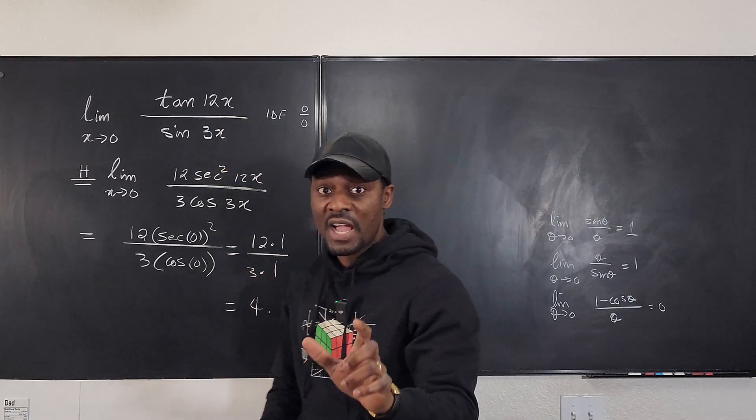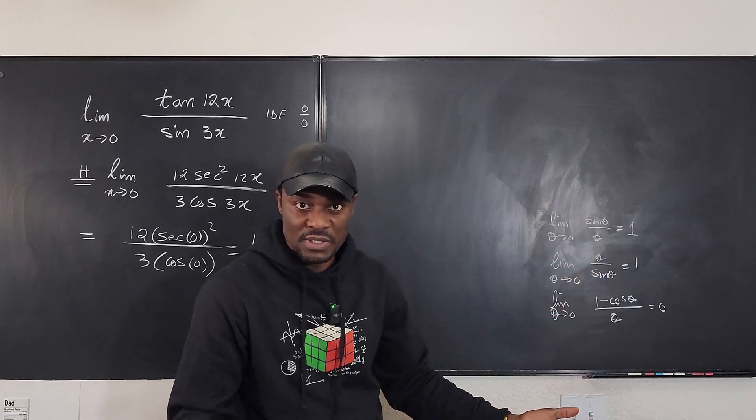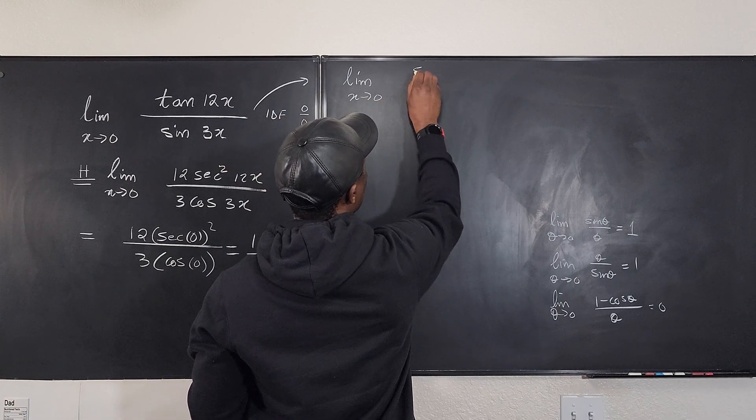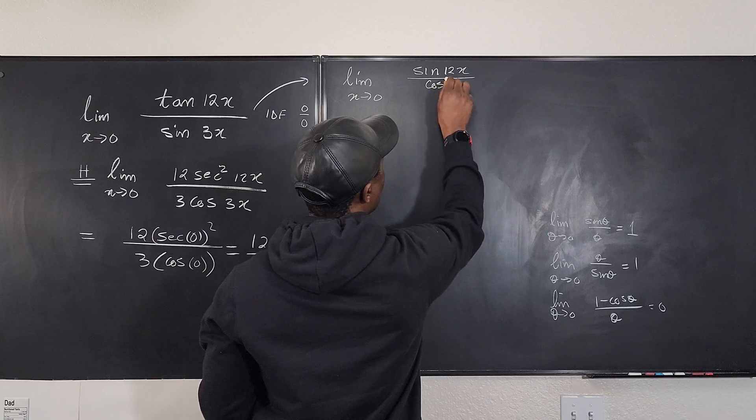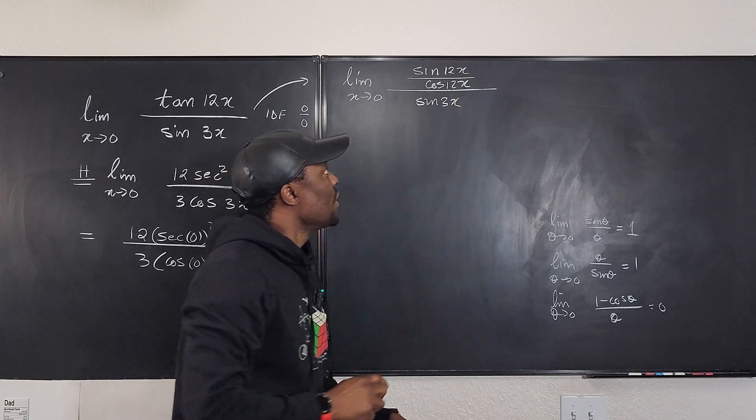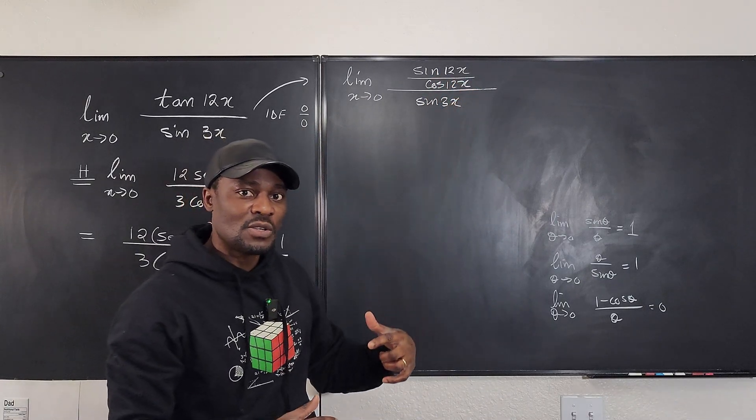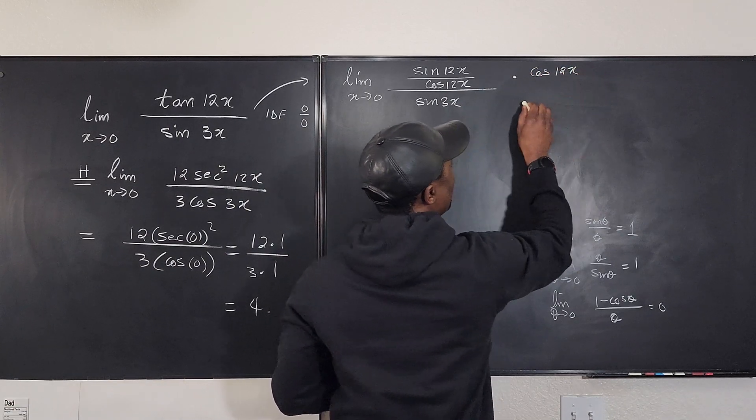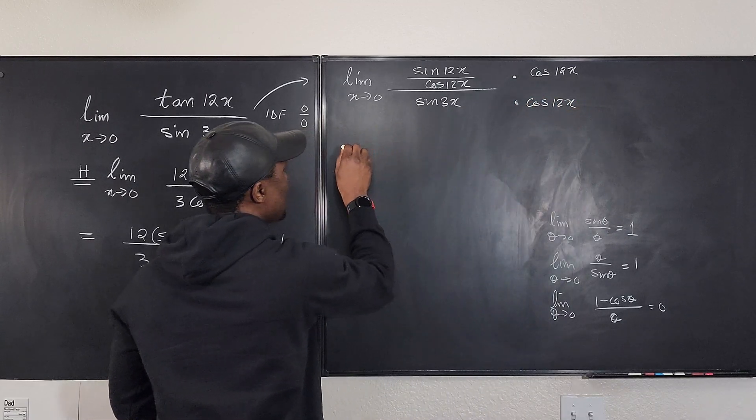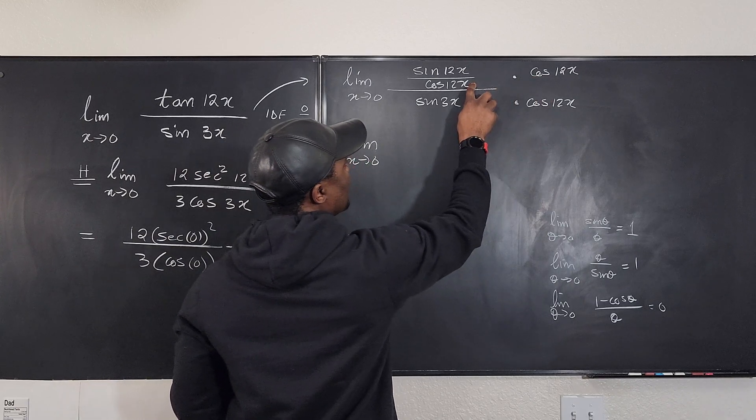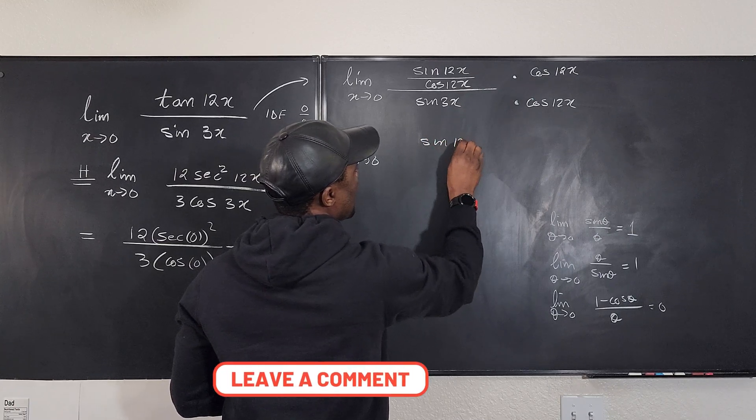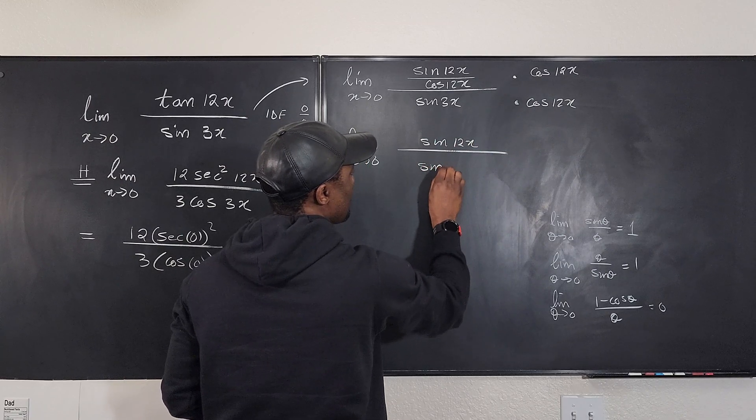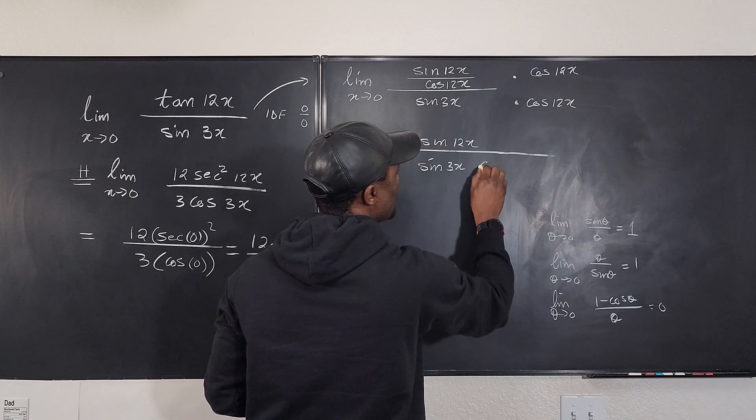We're going to say that this is the limit as x goes to zero of sine 12x over cosine 12x divided by sine 3x. So as you can see, I have rewritten this. Now we don't want a fraction within a fraction, so I'm going to multiply the top and bottom by cosine 12x. So if I do that, times cosine 12x, I'm going to multiply the bottom also by cosine 12x, so that my limit becomes, as x goes to zero, I'll cancel this out, so I have just sine 12x on top, and under I'm going to have sine 3x times cosine 12x.